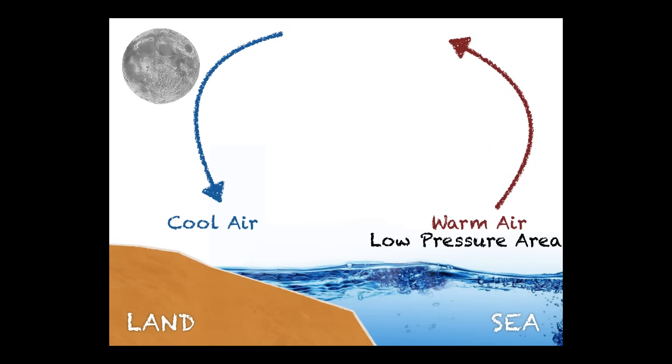Which then, of course, also means that as cold air is sinking over an area, more pressure is added to that area. Because you can see the arrow is pushing down over the land now. So now, high pressure over the land.